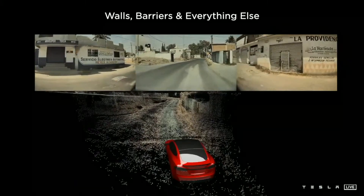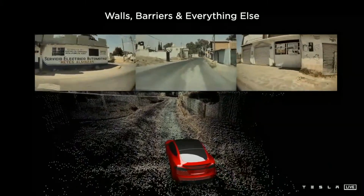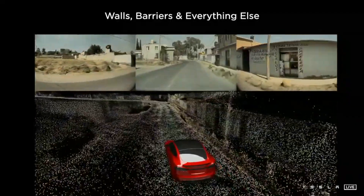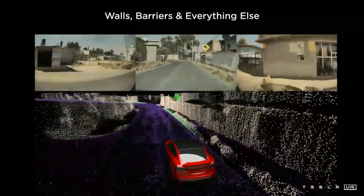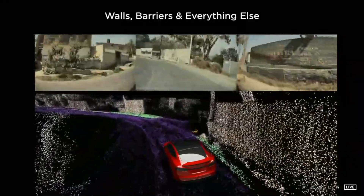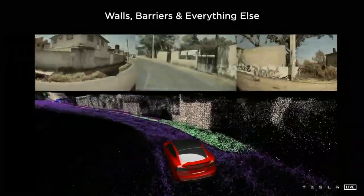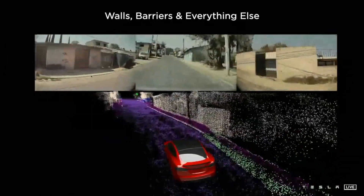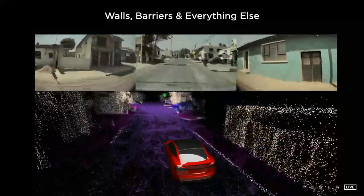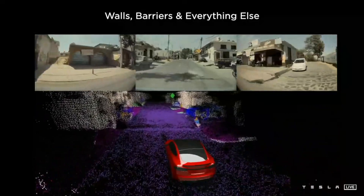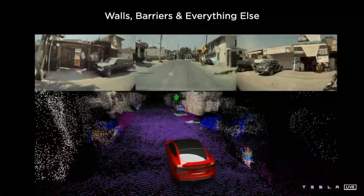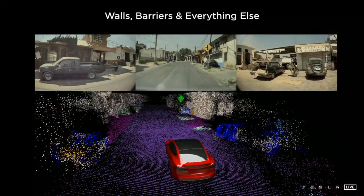We don't have to stop at just the road surface — we can also arbitrarily reconstruct 3D static obstacles. Here is a reconstructed 3D point cloud from our cameras. The main innovation here is the density of the point cloud. Typically, these points require texture to form associations from one frame to the next, but here we are able to produce these points even on textureless surfaces like the road surface or walls. This is really useful to annotate arbitrary obstacles that we can see in the world.